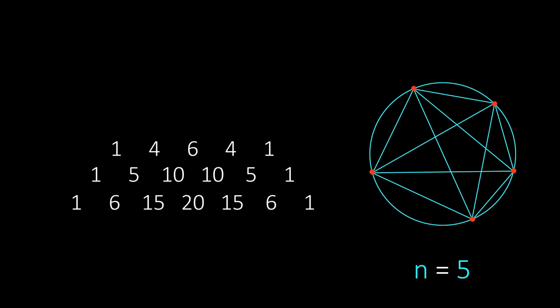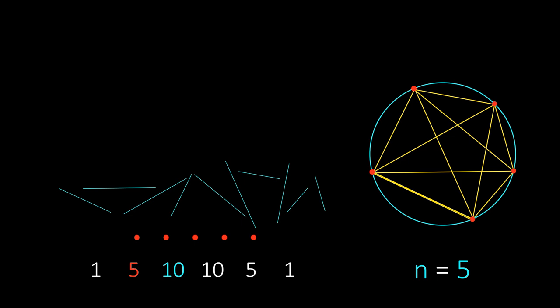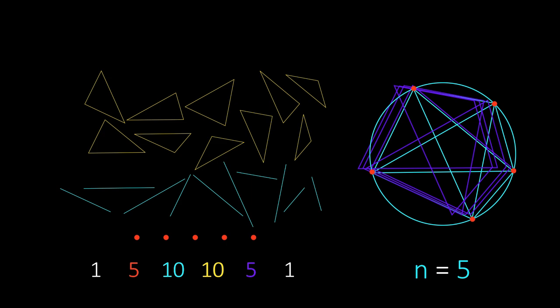Imagine a circle with n points on it and lines connecting each pair of points. If you look at the nth row of Pascal's Triangle, the second number represents the total number of points. The third number represents the total number of line segments. The fourth number represents the total number of triangles.